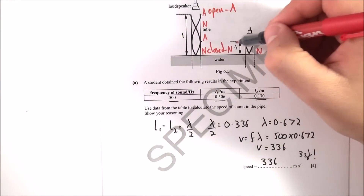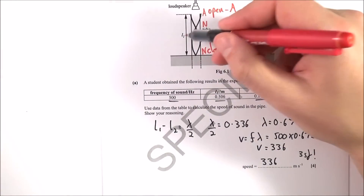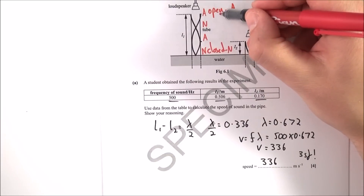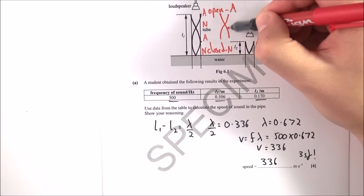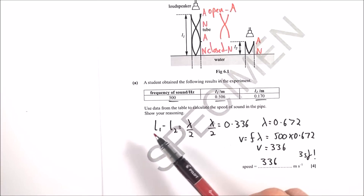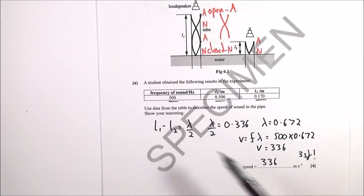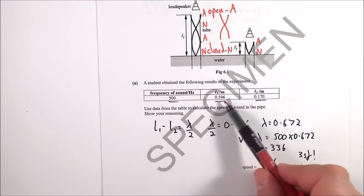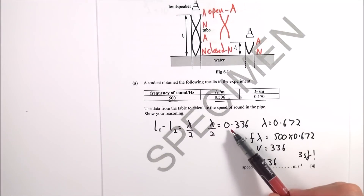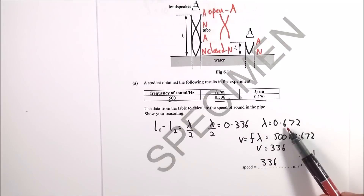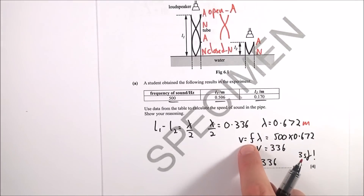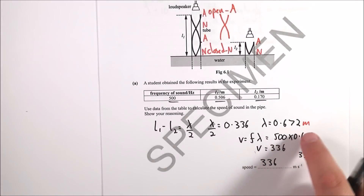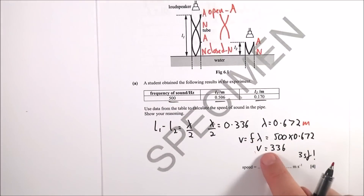The difference between l₂ and l₁ equals the distance between two adjacent anti-nodes, which is half a wavelength. So l₂ − l₁ = λ/2. Taking data from the table: λ/2 = 0.336 m, therefore λ = 0.672 m.